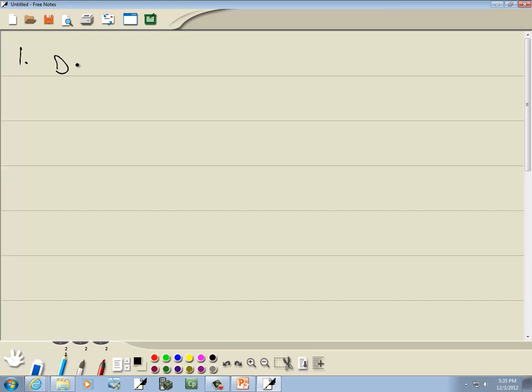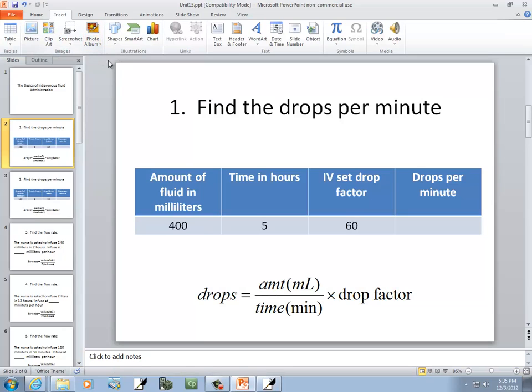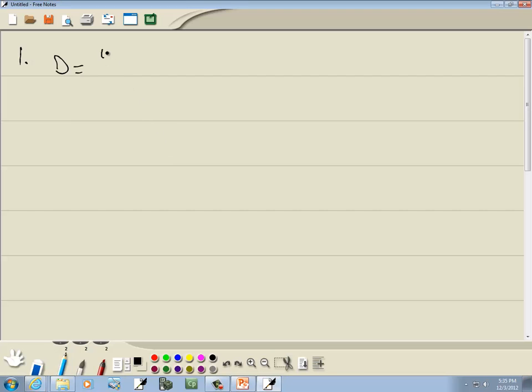For drops per minute, I'll just say D for drops, is equal to amount in milliliters. In this problem, they tell us the amount of fluid in milliliters is 400, so we'll have 400.